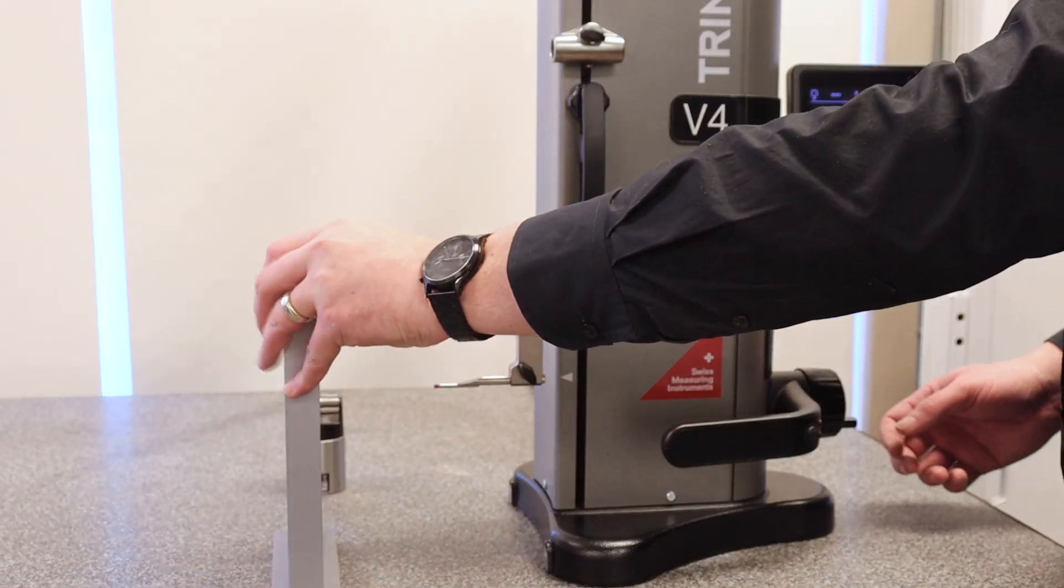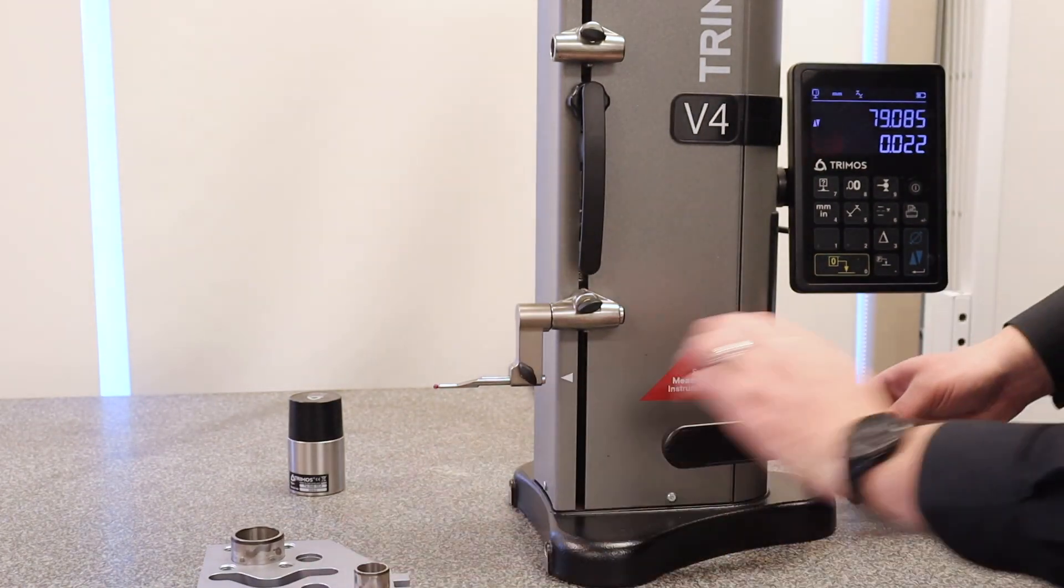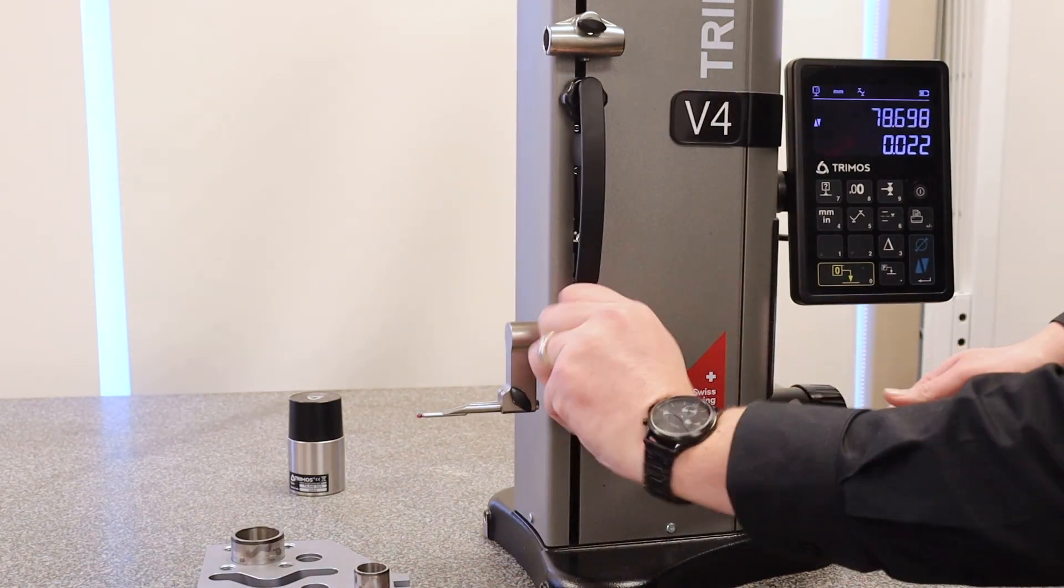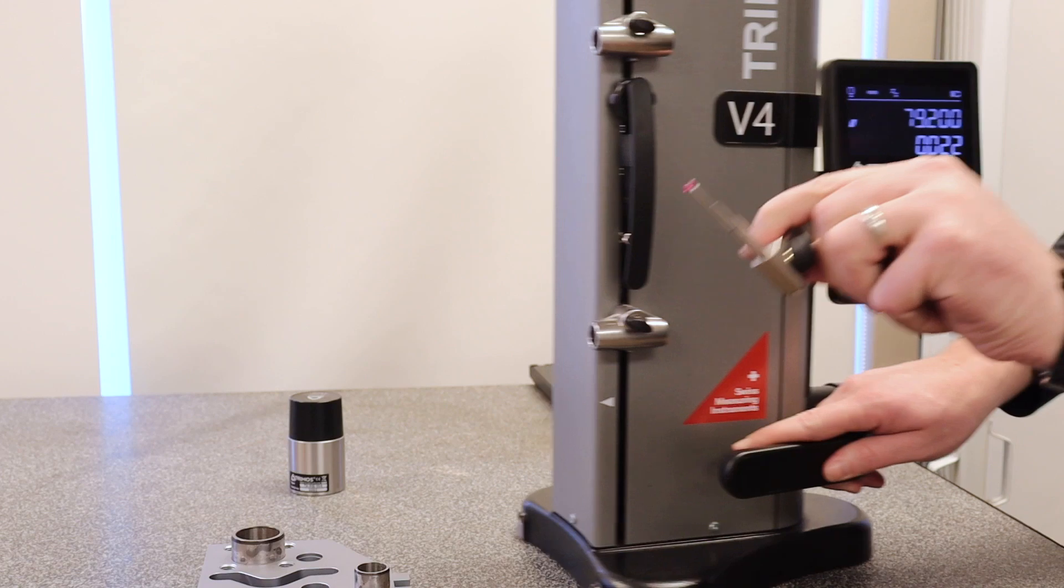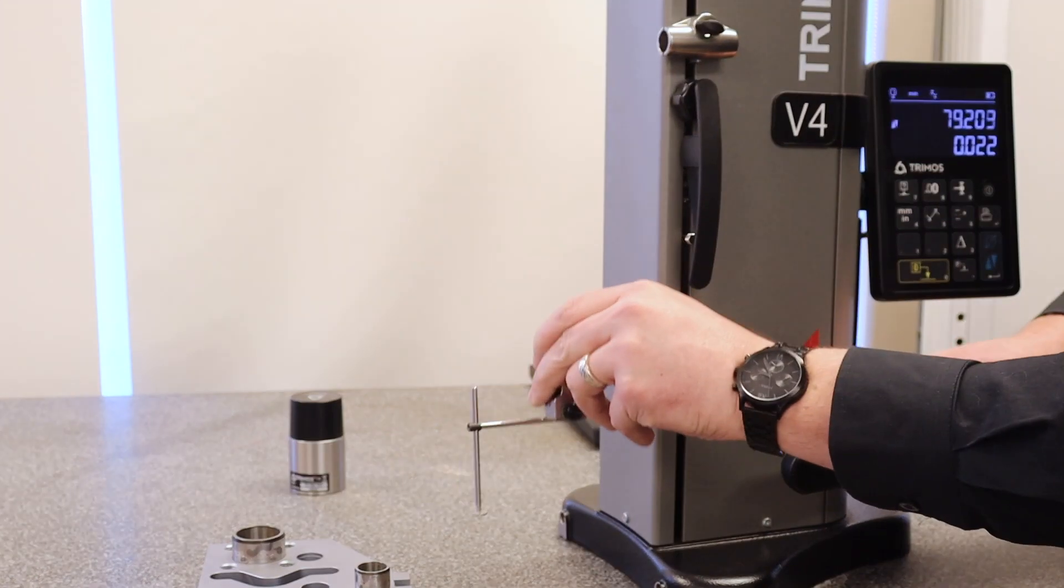The next thing we're going to show you is how to measure the width of a groove. So I'm just going to place the part down on its side. We're going to pop off the four millimeter ruby probe that comes with the unit and we're going to put on a disc probe in this orientation.